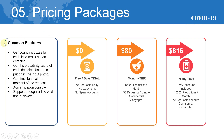Pricing packages: Common features include getting bounding boxes for each detected face mask, getting the probability score of each detected face mask in the input photo, getting a timestamp at the moment of the request, an administration console, and support through online chat and/or tickets. For the free 7-day trial you have 50 requests daily, no copyright, no spam accounts. The monthly tier is 80 US dollars and includes 10,000 predictions per month, 50 requests per minute, and commercial copyright. The yearly tier is 816 US dollars with a 15% discount included and the same features as the monthly tier.